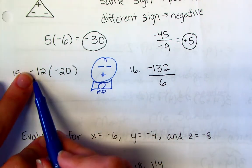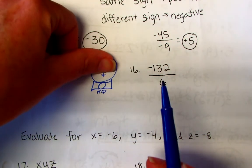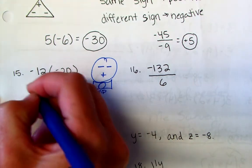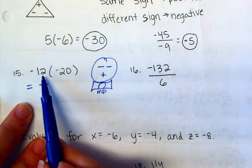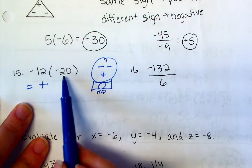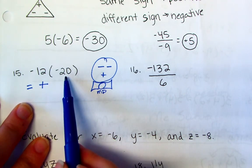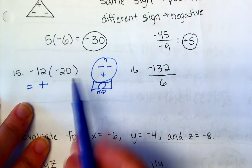So I know I have a negative and a negative. So if I was to cover that up, my answer is going to be positive. So I know my final answer is positive. And then 12 times 20, a couple of things you could do here. You could do 12 times 10 to give you 120 and then double that to get 240.